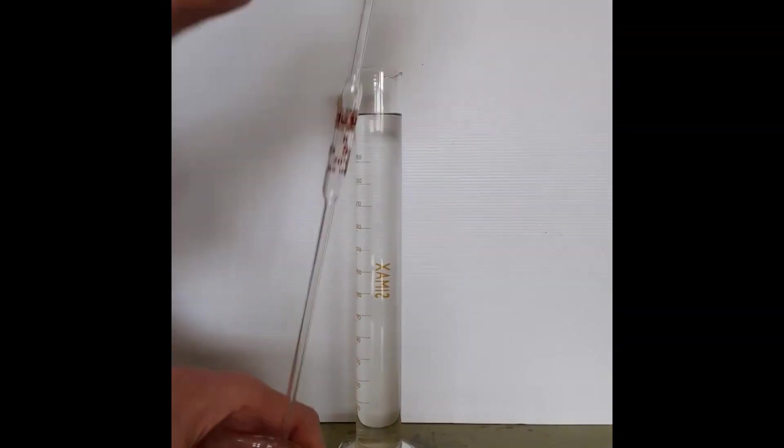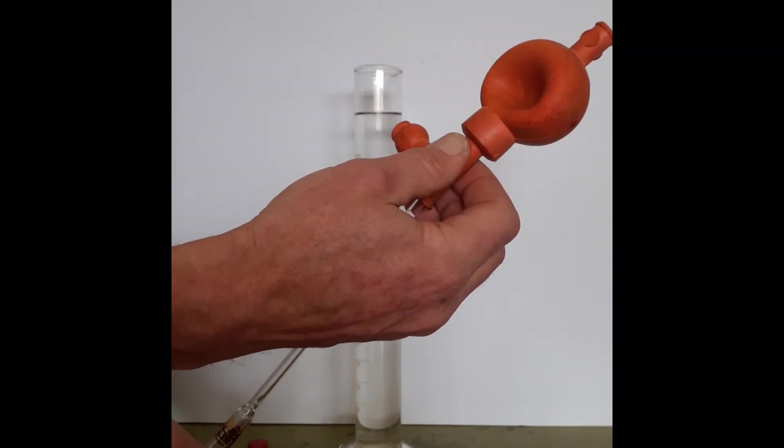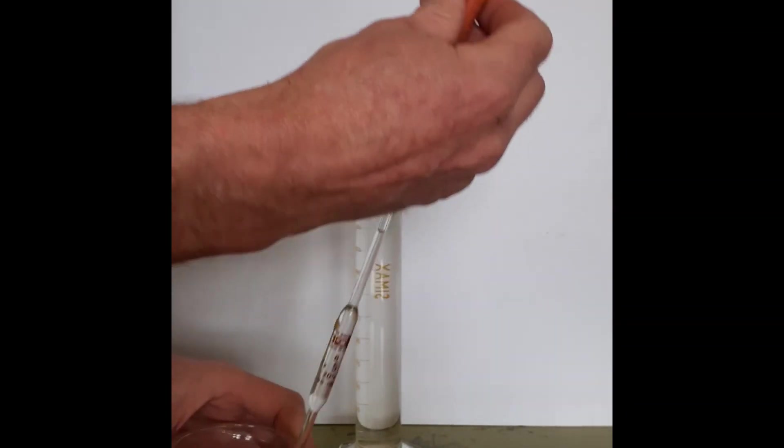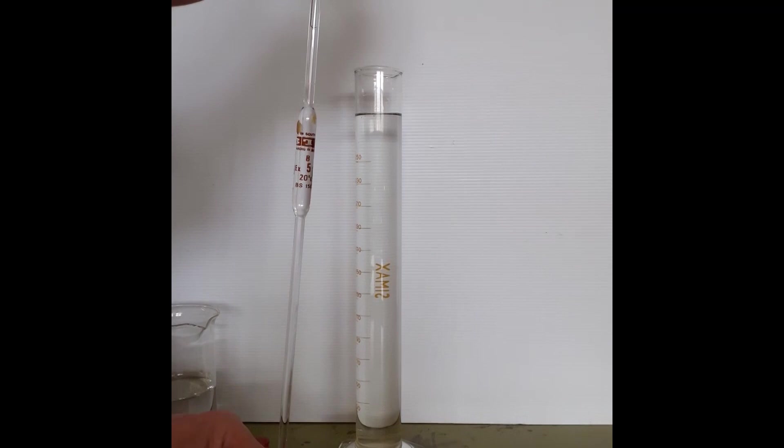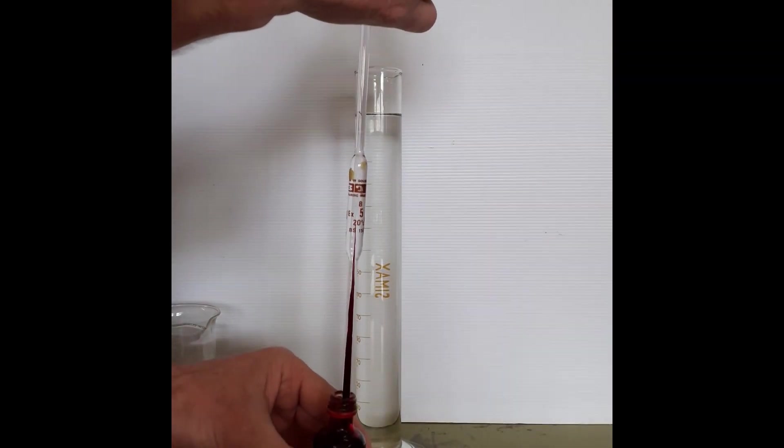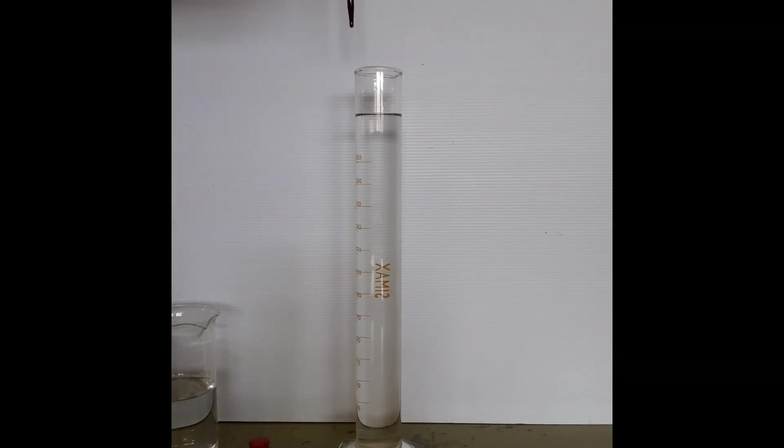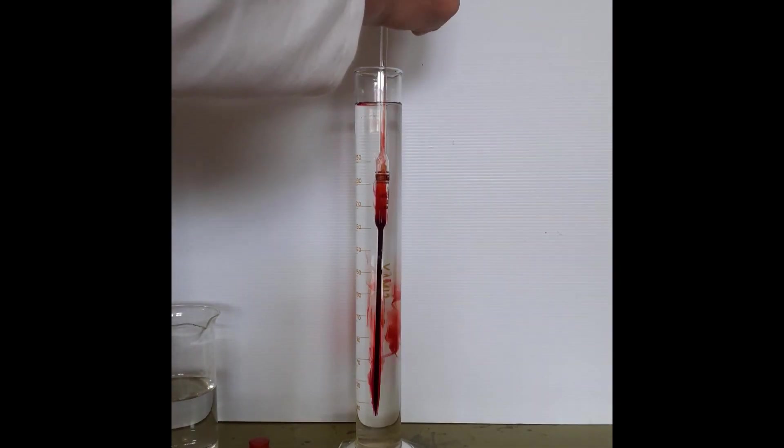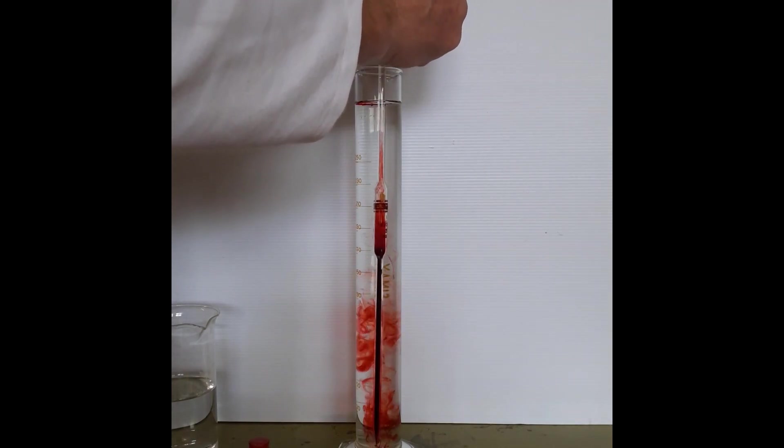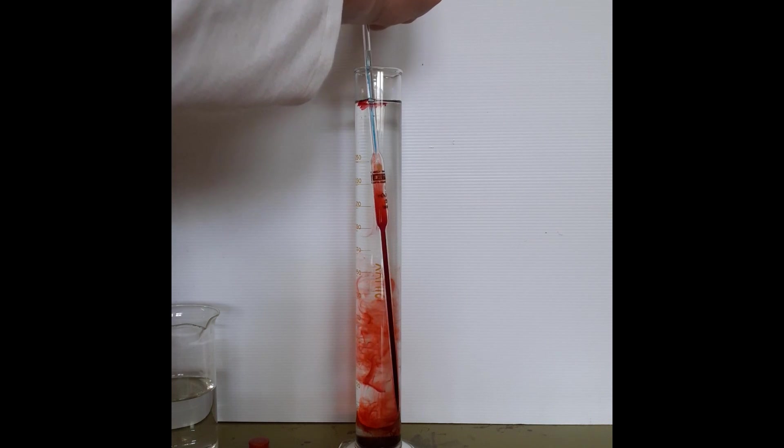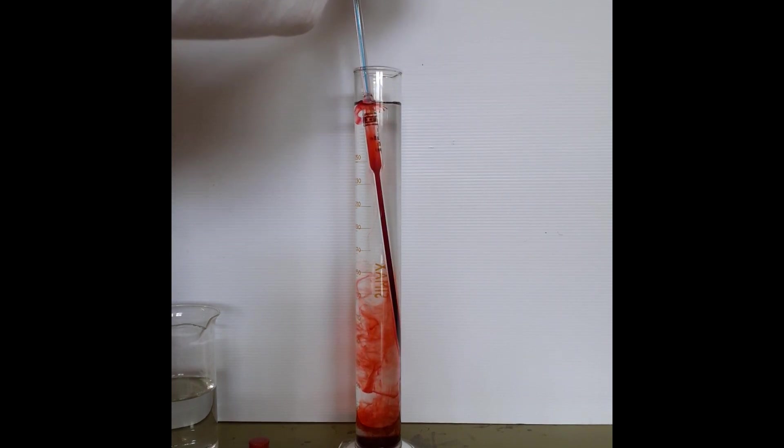Here we have a measuring cylinder full of water and in the pipette we are going to suck up some red food coloring. And as carefully as we can we try and run this into the bottom of the cylinder. It's very difficult to get no mixing to occur but we are trying to minimize that.